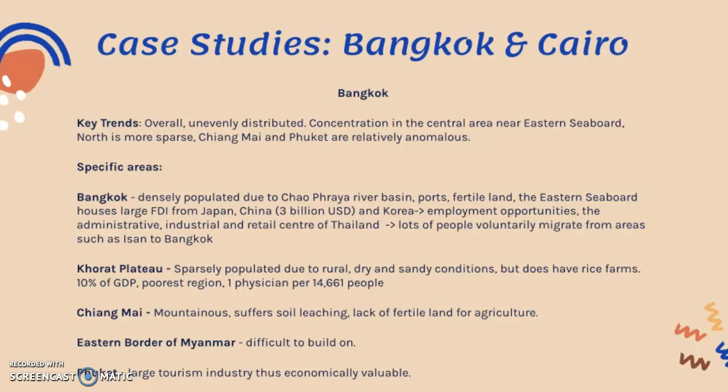Looking at Thailand's population distribution map, the overall trend is that it is unevenly distributed, with concentration in the central area near the eastern seaboard and Bangkok. The north tends to be more sparse. However, there are anomalous areas such as Chiang Mai and Phuket, which have quite dense populations compared to surrounding areas — this will be discussed later in relation to the core-periphery model.